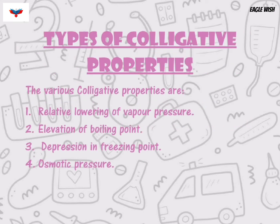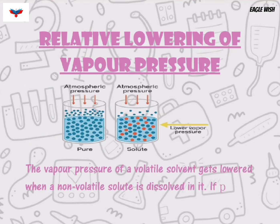There are four types of colligative properties: one, relative lowering of vapor pressure; two, elevation of boiling point; three, depression in freezing point; and four, osmotic pressure. We will mention each colligative property separately.